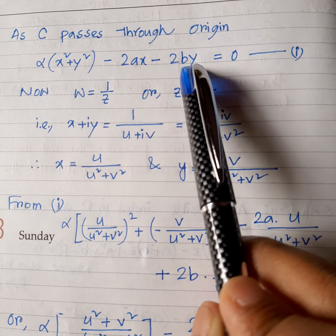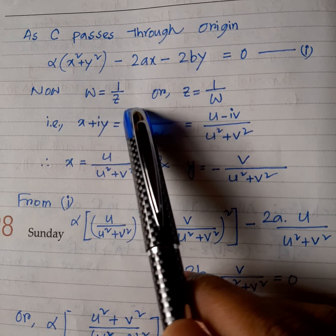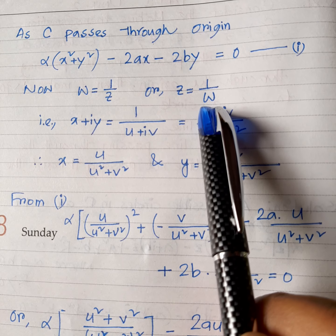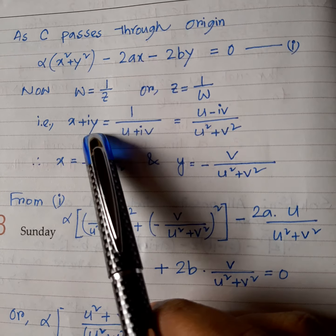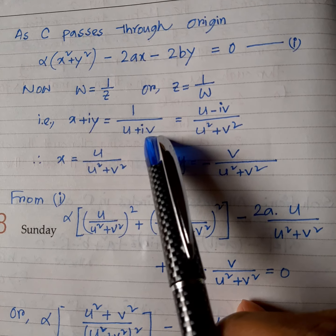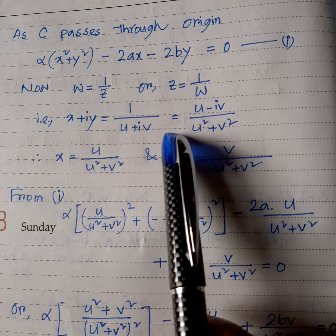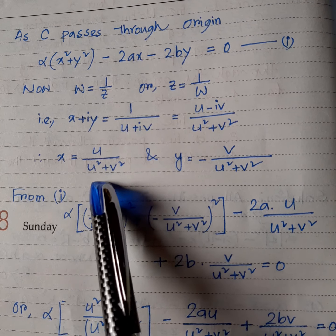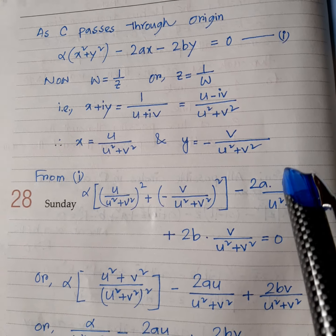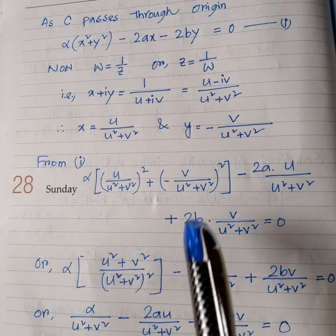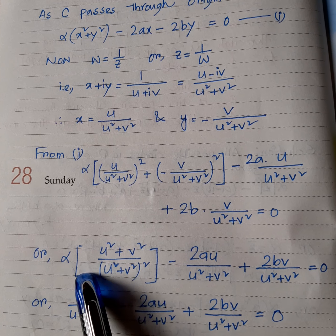Now the given transformation is w = 1/z, equivalently z = 1/w. We put z = x + iy and w = u + iv, and after equating real and imaginary parts we get: x = u/(u² + v²) and y = −v/(u² + v²). Substituting these values of x and y into equation (1) and simplifying, we get an intermediate expression.